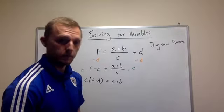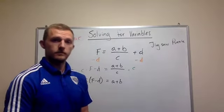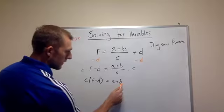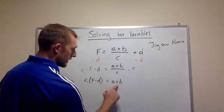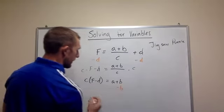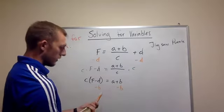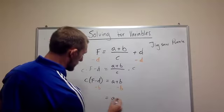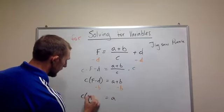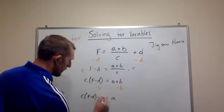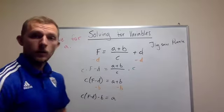Now I have to get rid of the B. Which, again, since it's adding, the B is positive. I would have to subtract the B from both sides. So therefore, after this grueling process, comes out to be C, F minus D, minus B. And this would be your answer.